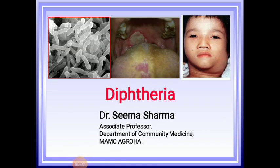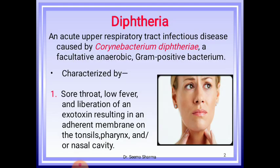Today's topic is diphtheria. Diphtheria is an acute upper respiratory tract infectious disease caused by Corynebacterium diphtheriae. It is a facultative anaerobic gram-positive bacteria. A facultative anaerobe is an organism that makes ATP by aerobic respiration if oxygen is present but is capable of switching to fermentation or anaerobic respiration if oxygen is absent. Obligate aerobes cannot make ATP in absence of oxygen, while obligate anaerobes die in presence of oxygen.